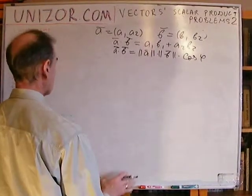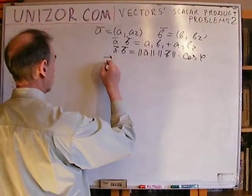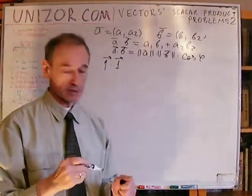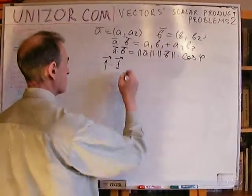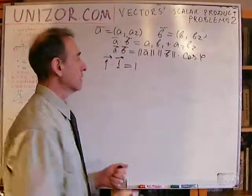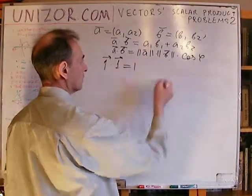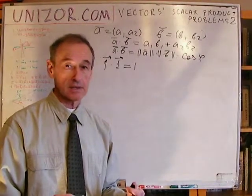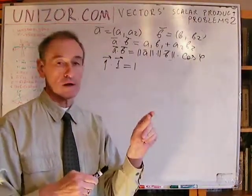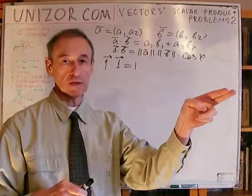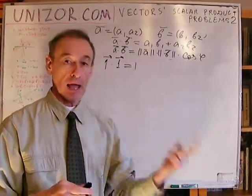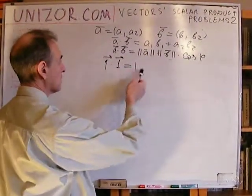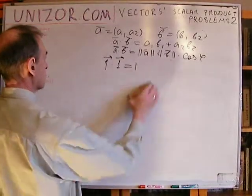Next is another simple case. If I have one unit vector multiplied by itself, the result is supposed to be one. Again, it's very easy: the length equals one for both factors, and the cosine of the angle — since I'm multiplying a vector by itself, both vectors point in exactly the same direction, so the angle between them is zero, and the cosine of zero is one. So we have one times one times one, and that's why this product equals one.